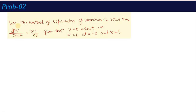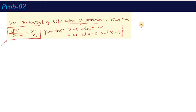Here is problem number 2: use the method of separation of variables to solve this particular equation. Unlike the last lecture which had a first order equation, this time we have a second order derivative — a second order equation. Some conditions are mentioned in this problem, which we will use later. First, we apply the separation of variable method. We need to find the solution, which means calculating the value of v as a function of x and t.